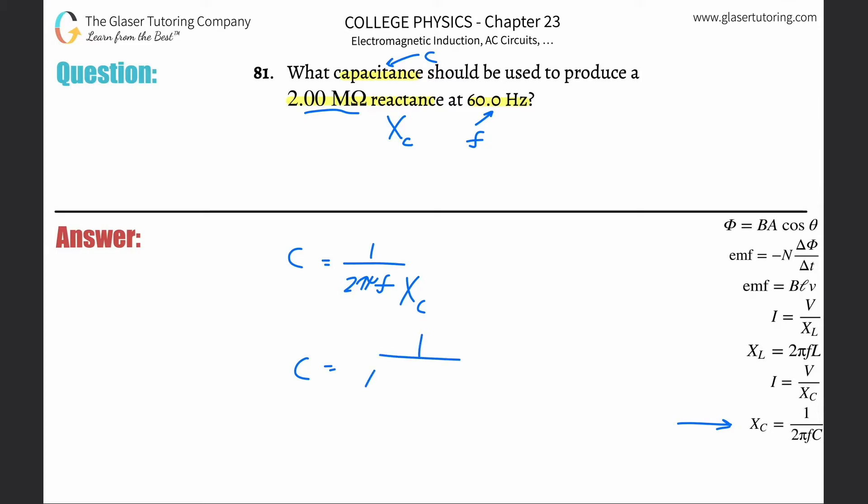So this is just going to be 1 divided by 2 pi multiplied by the frequency in hertz. They gave that to us, so that's 60, multiplied by the capacitive reactance in ohms.